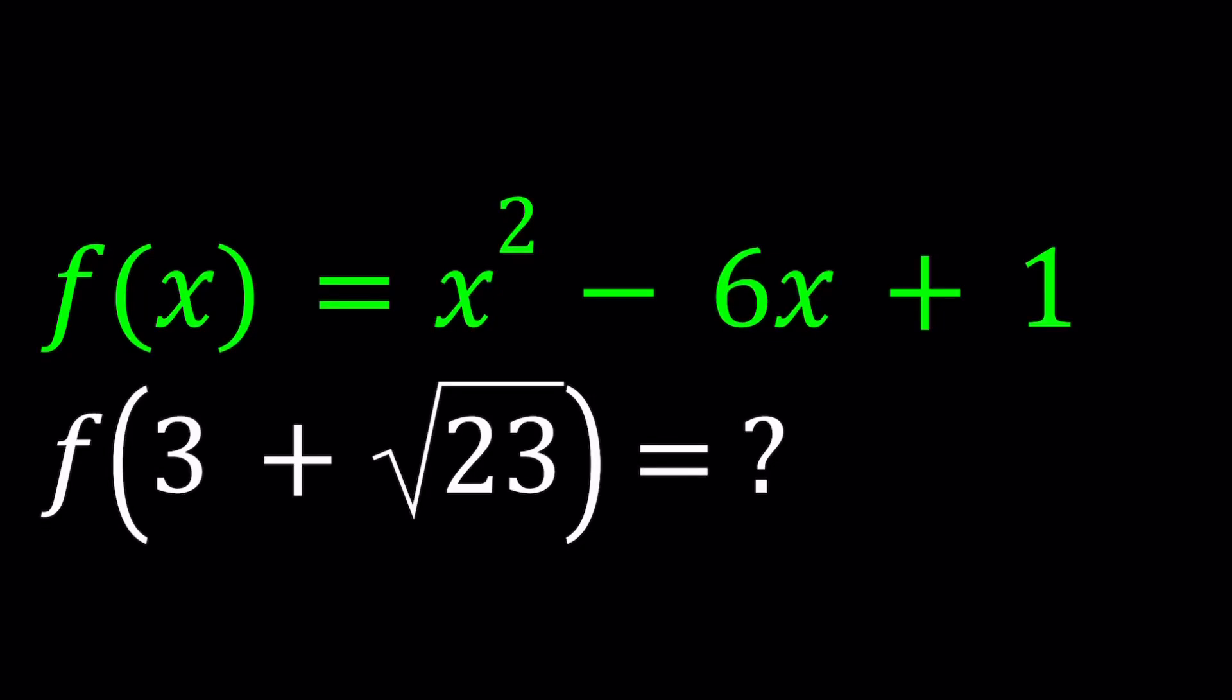Hello everyone, in this video we're going to be evaluating a function at a given point. So we have f of x equals x squared minus 6x plus 1, and we're supposed to evaluate f of 3 plus the square root of 23. Why do we have such a radical? Because this problem allows for two different methods.